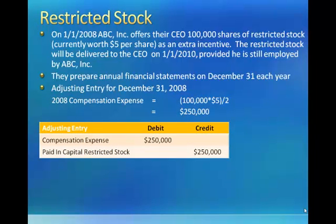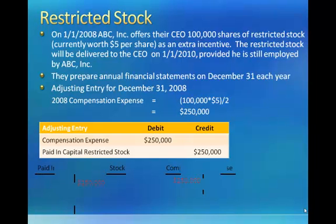The journal entry is a debit to compensation expense of $250,000 and a credit to paid-in capital restricted stock of $250,000. This credit is not to a liability account — it is to an equity account. Within owner's equity, paid-in capital restricted stock falls under contributed capital. So unlike the salary and interest examples, instead of crediting a liability, we're crediting an equity account. This is an example of an accrued expense that affects equity rather than a liability, while the debit still goes to an expense account — compensation expense.